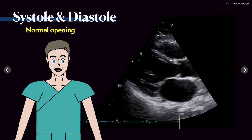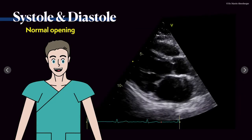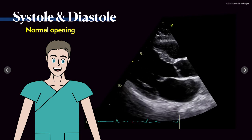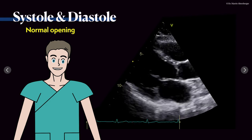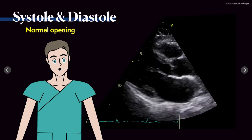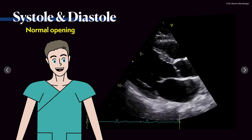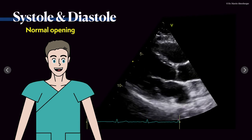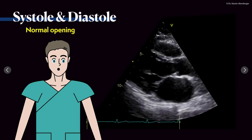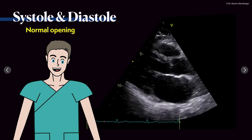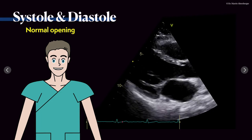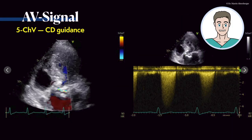Here is just another example where you see the opening and the closure in the parasternal long axis as it should be. This is distinctly different from what we have seen with our patient Ernest. The normal opening looks like this — opening in systole and closure in diastole.